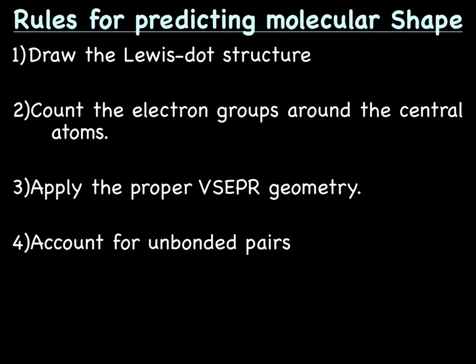Let's quickly do a review of rules for predicting molecular shape. Step one is draw the Lewis dot structure. Then count the electron groups around the central atom. Apply the proper VSEPR geometry, meaning linear, trigonal planar, pyramidal, tetrahedral, or bent, and make sure you've accounted for all unbonded pairs. That's really all there is to predicting molecular shape. You need to know the names of the shapes, basically what they look like, and remember how many unshared or shared pairs go for each shape. And that's it. All right, have a good one.